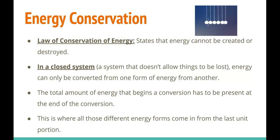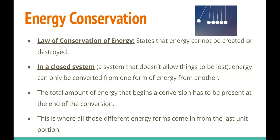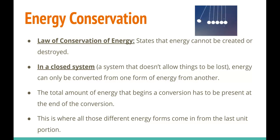A long way of saying: a closed system is a system used in science to base calculations and solve problems — where we can account for things we can account for, and sometimes ignore things we really can't. This isn't something you'll be tested on specifically, but this term will come back throughout the year. The total amount of energy that begins a conversion has to also be present at the end of a conversion — that's a reiteration of the law of conservation of energy. In unit 3.1 you went over all eight different energy types, and here we're going to show how we go from one to another.